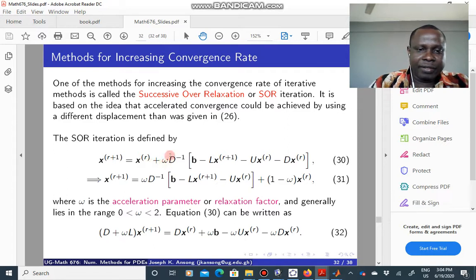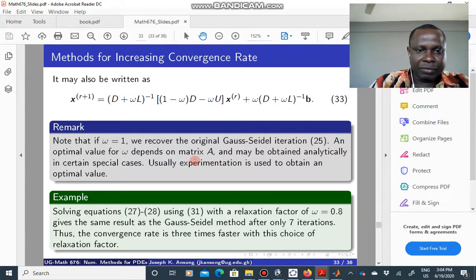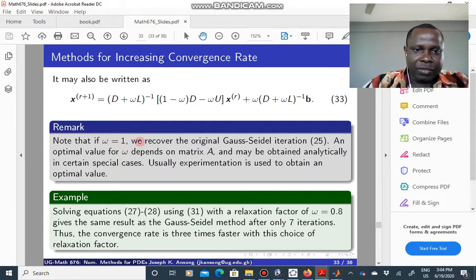When omega is equal to 1, then you are back to the Gauss-Seidel method. So you can basically use the same code to test both schemes. So that's what I just said.